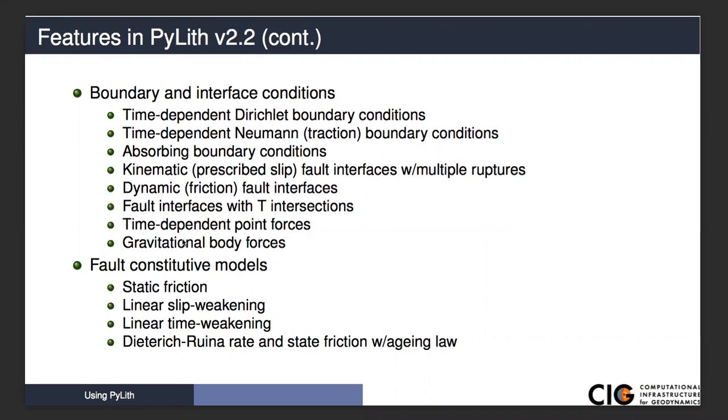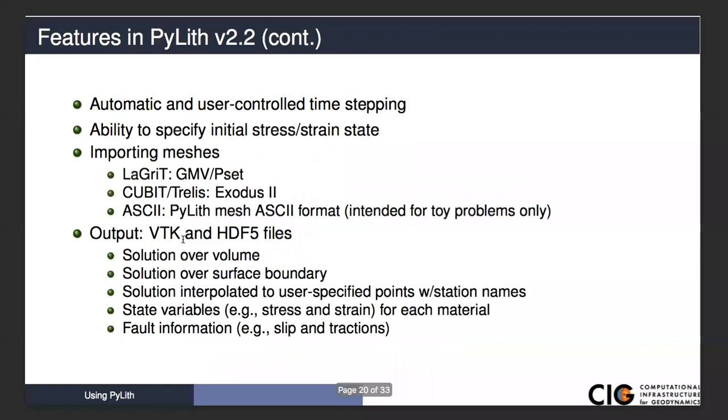User-controlled is if you know something's happening and you need finer discretization at certain time steps, you can actually control that if you know a priori when you need those finer time steps. I've discussed the various ways we import meshes. Output in VTK and HDF5—you can output over the entire volume of the domain, over a surface boundary, or interpolated to specific points such as GPS or seismic stations, where the files can also include in the output the station names.